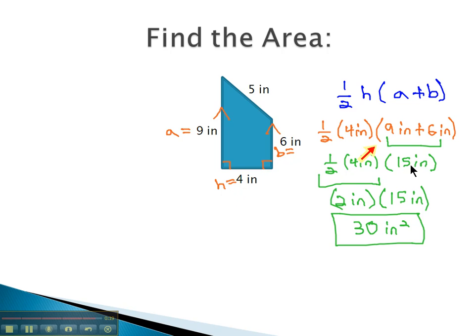Plugging those into our formula, one-half height times A plus B, the sum of the bases. Using order of operations, we can find the area of our trapezoid.